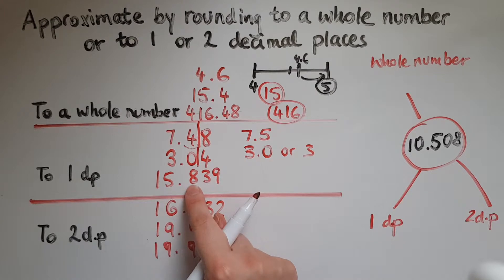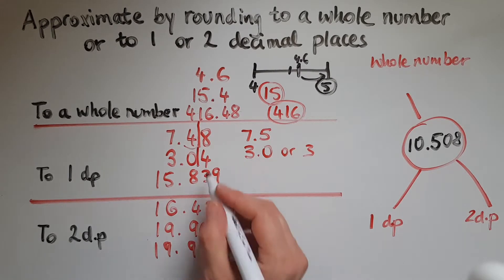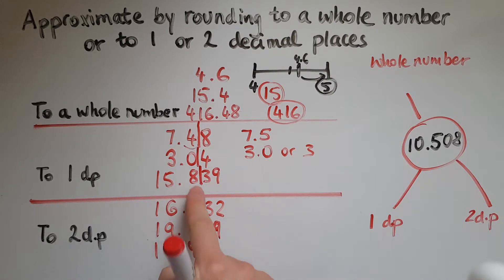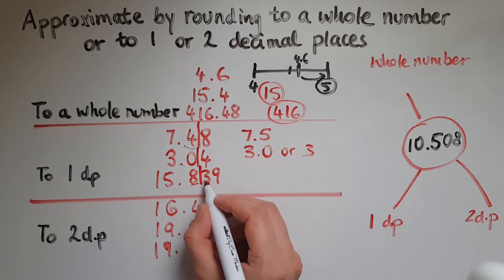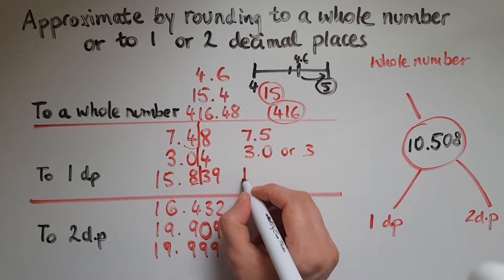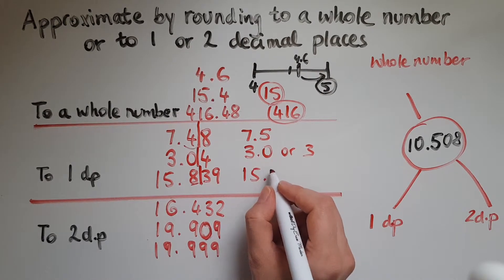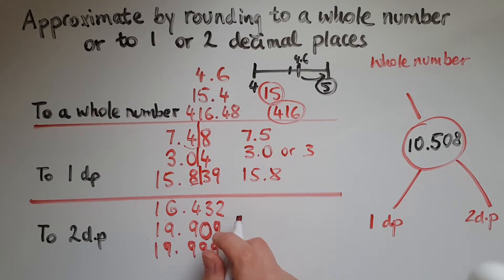Now 15.839. Again, I need to cut this off here because this is telling me one decimal place. So in order to decide, I'll look at the digit on the right. And that is the 3. And we've said if it's 0, 1, 2, 3 or 4, we round down. So we'll keep this as 15.8 rather than 15.9.